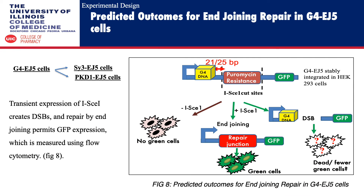In the case of G4-EJ5 cells, which consist of either Sgamma3-EJ5 cells or PKD1-EJ5 cells, transient expression of I-SceI creates double strand breaks, and repair by end joining permits GFP expression, which is measured using flow cytometry.